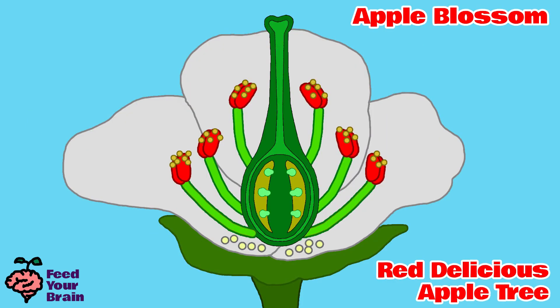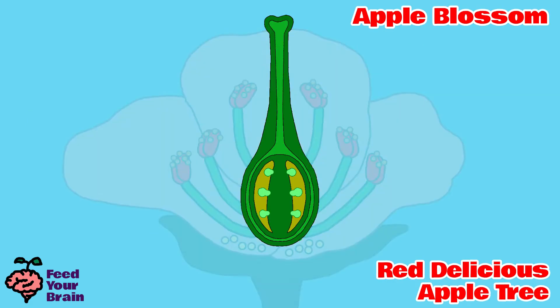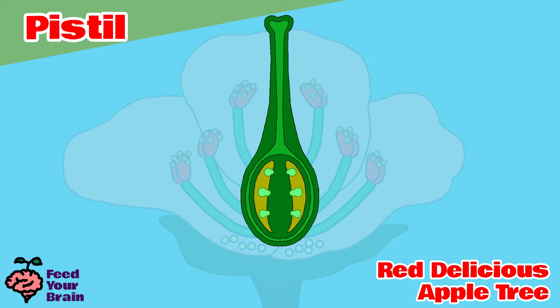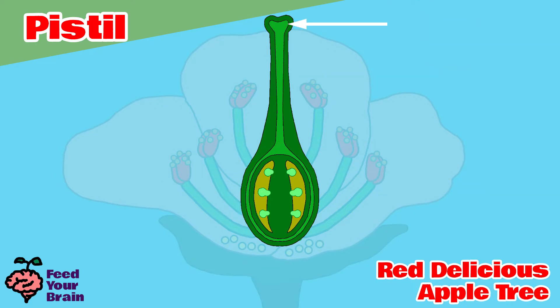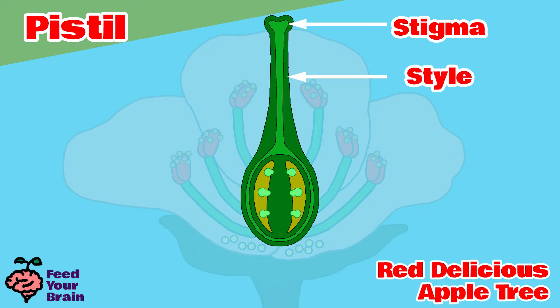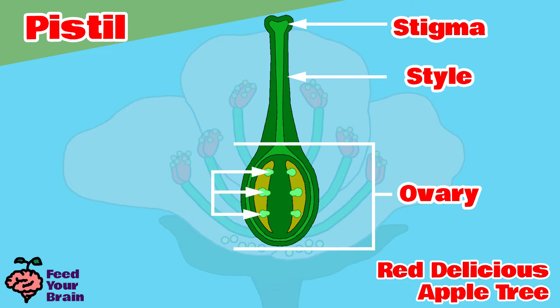Now back at the apple blossom. Let's look at the middle part — this entire middle part is called the pistil, made up of several parts. At the top is an opening into a tube called the stigma. The long tube is called the stile. And the entire bottom round area is called the ovary. Within the ovary are many little ovules.